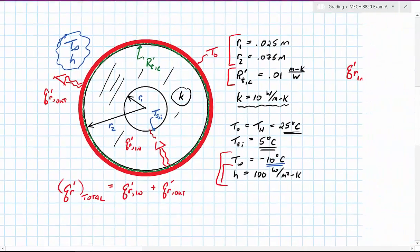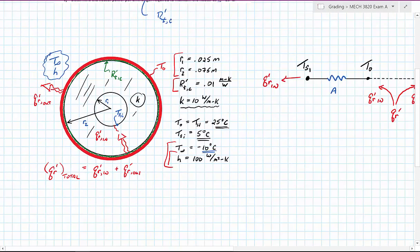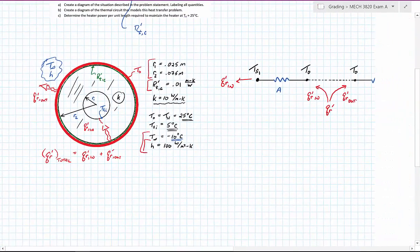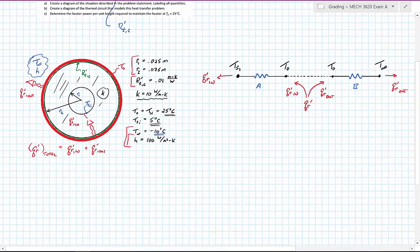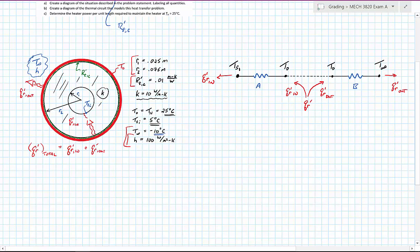So if we proceed and we look at this problem in terms of a thermal circuit, which I have sketched here, we can see that we have heat moving towards the inner portion of the pipe from the heater, which we're going to call T_0, and we'll call this inward, and we also have heat moving outward.